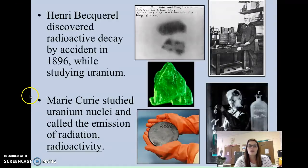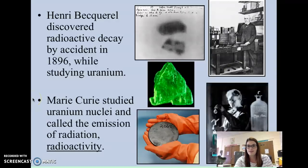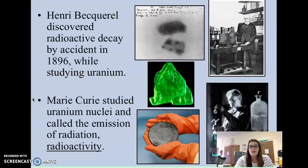Another person we really like to talk about is Marie Curie. She was actually the first woman to get a lot of credit for these kinds of scientific discoveries in chemistry. She studied uranium nuclei — the nucleus of the element uranium — and she called the emission of radiation radioactivity. So we're familiar with things that are radioactive, and some of the elements, like uranium, are radioactive. She's the person that came up with and discovered this.